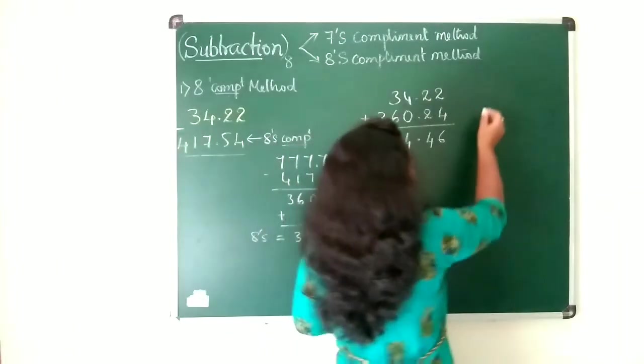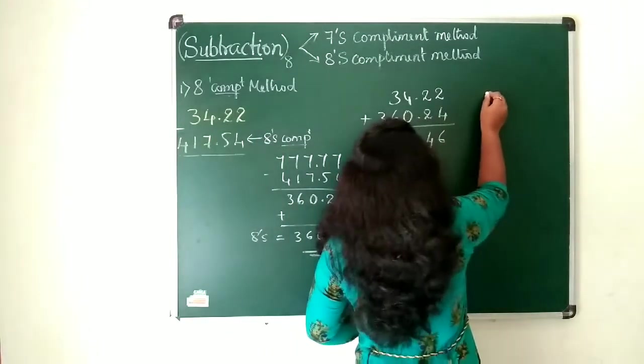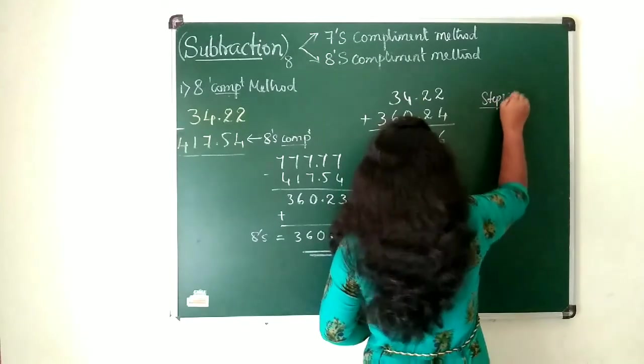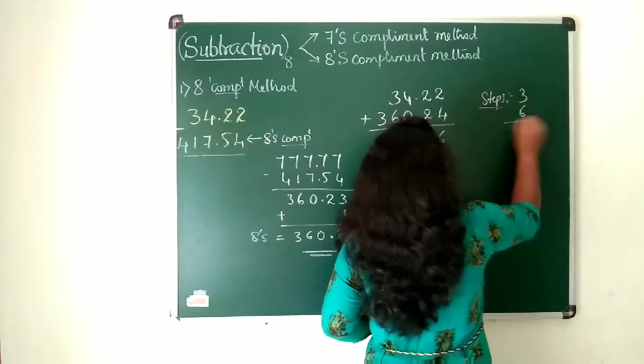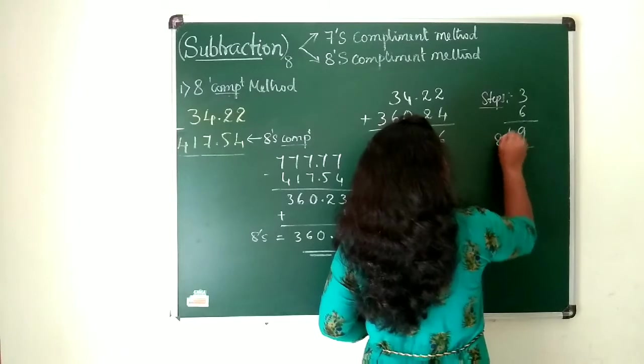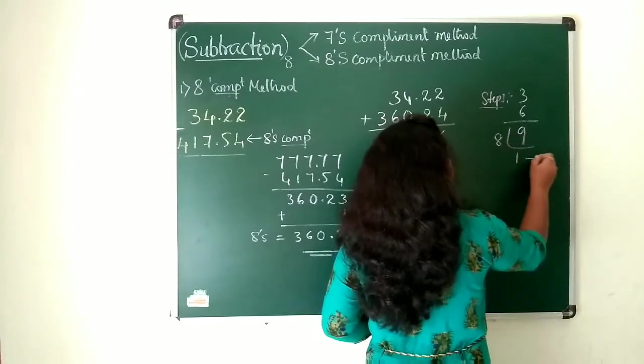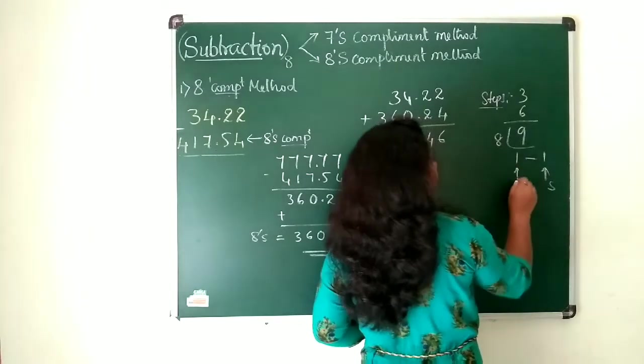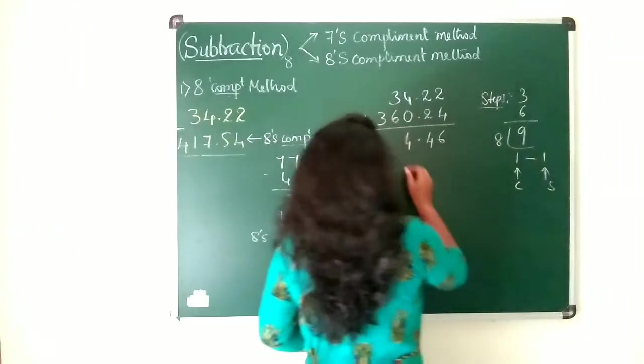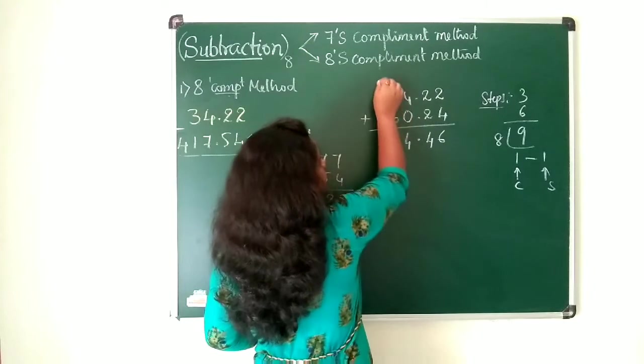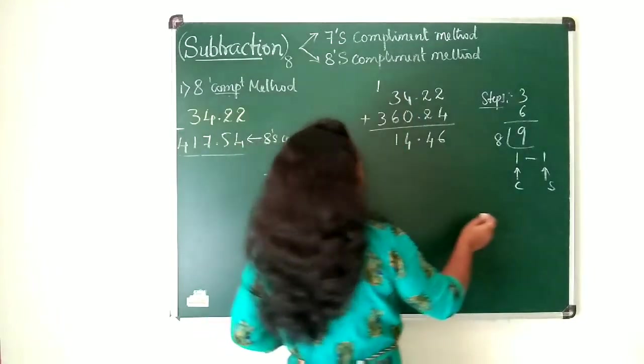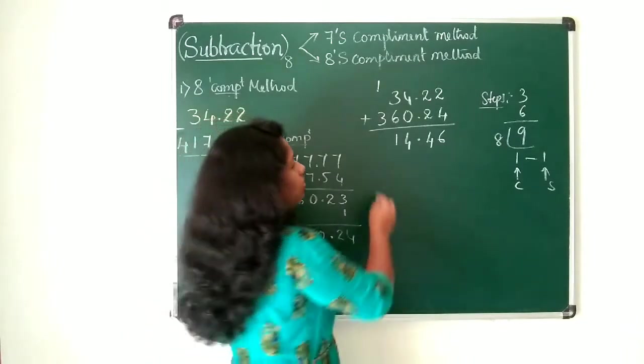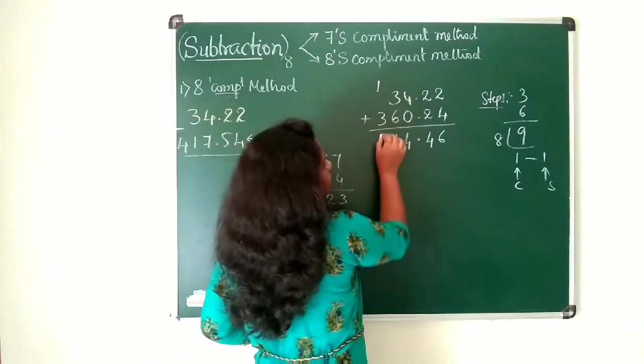3 plus 6, that is 9, which is not a valid number in the octal set. So take step 1. 3 plus 6 is 9. Convert this to octal. 8 goes into 9 one time with remainder 1. 1 becomes your sum and this 1 becomes carry. And then 1 plus 4 is a valid value. 1 plus 3 is 4.